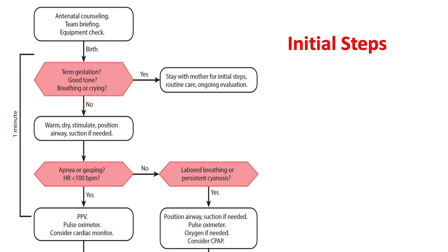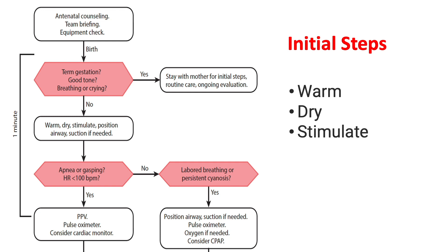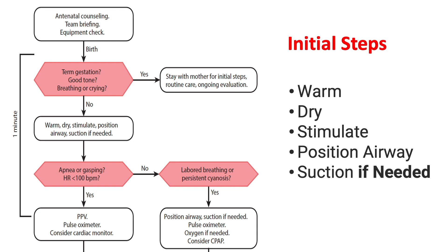The initial steps have been re-ordered to better reflect common practice. In the past, suction had a higher priority. Suction will still be required if there's lots of secretions, the baby cannot clear its own airway, or the decision has been made to start with positive pressure ventilation, or PPV. As always, we'll place the baby on the warmer, dry the baby, stimulate the baby — also don't forget to remove the wet linen — and then position the airway in the sniffing position. If suctioning is needed, we can proceed to perform suctioning as well.